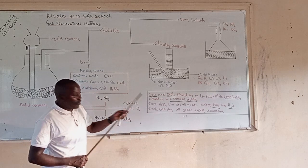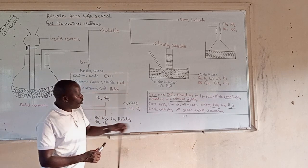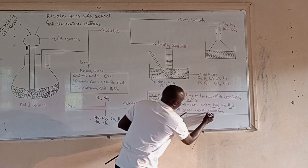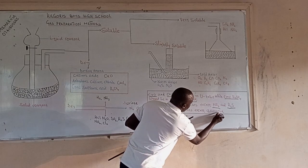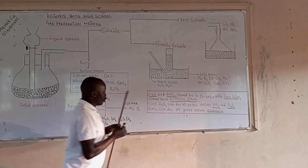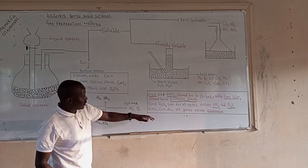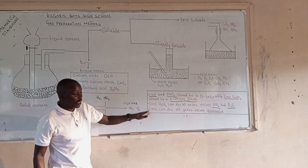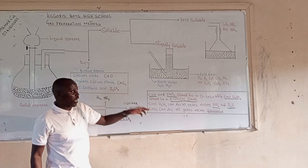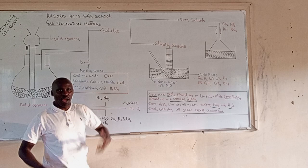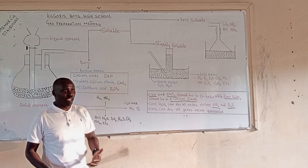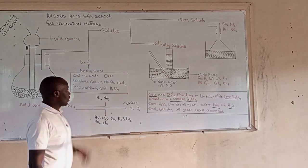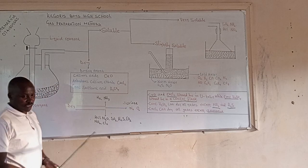Anhydrous calcium chloride can dry all gases except ammonia gas. Ammonia gas will react with anhydrous calcium chloride, forming ammonium chloride, and therefore no dry gas can be collected.